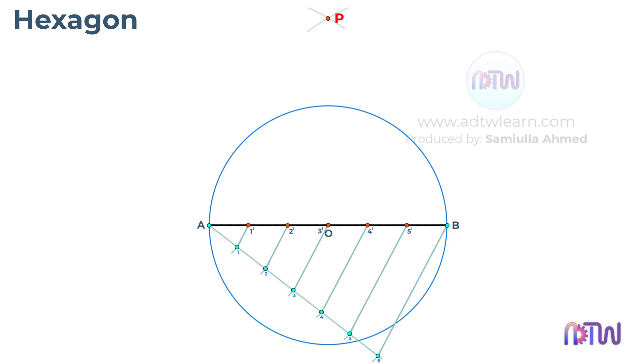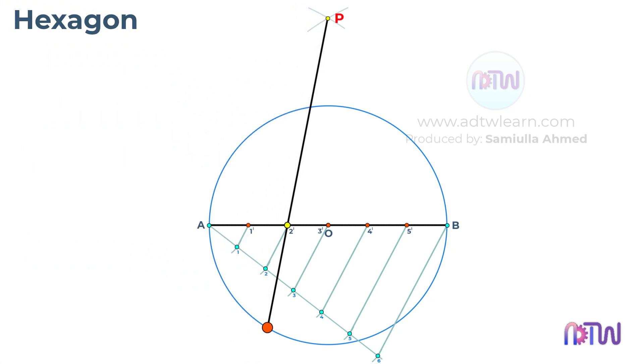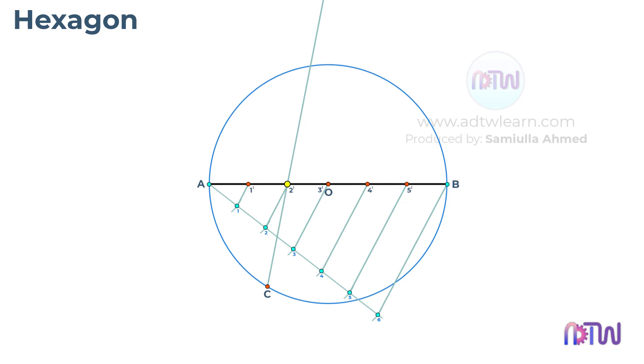Next, draw a line passing through this point P and point 2 dash, such that it touches the circumference of the circle. This point will be our point C. The distance between point A and point C is the side length of a hexagon which will exactly fit into this circle.